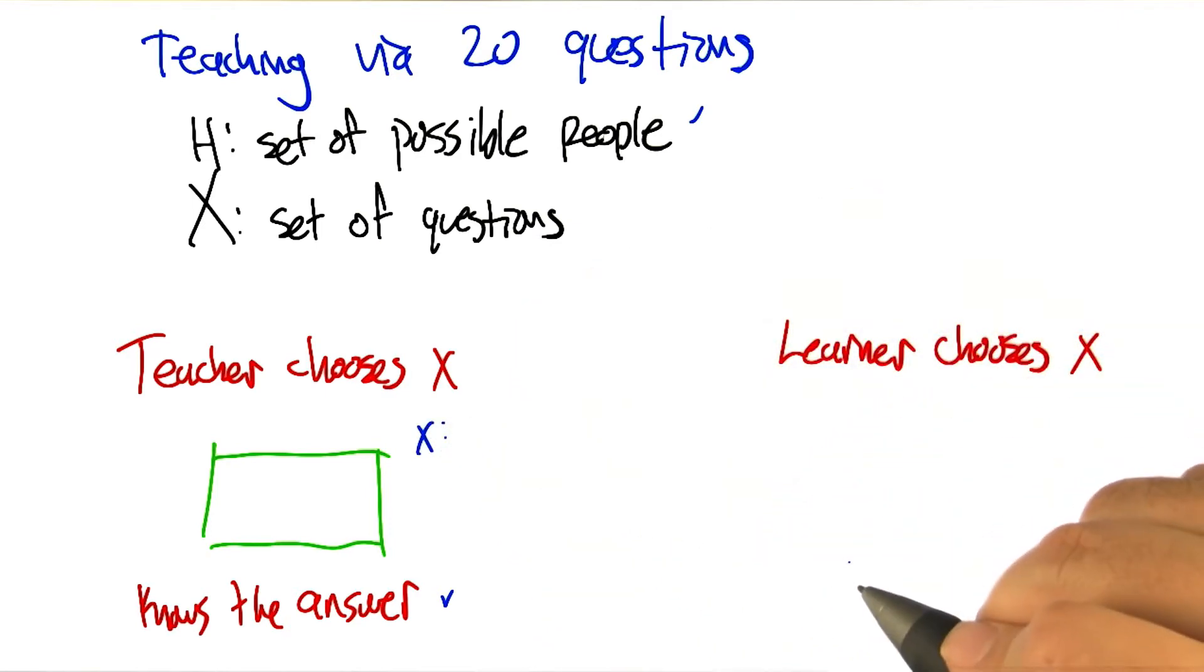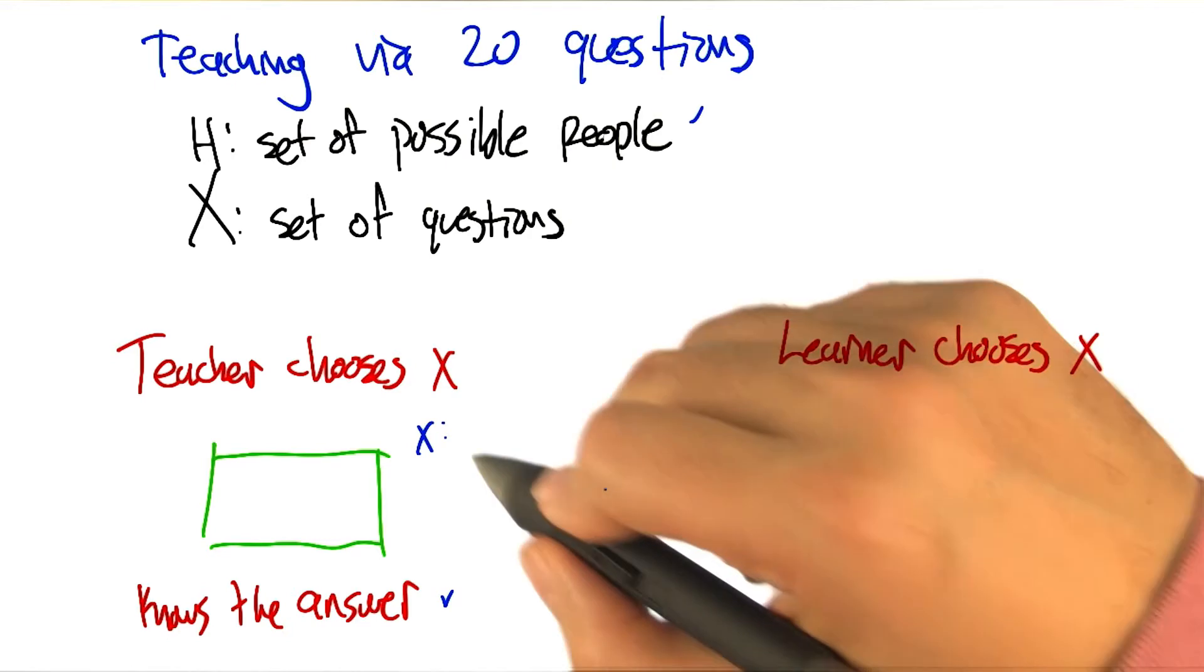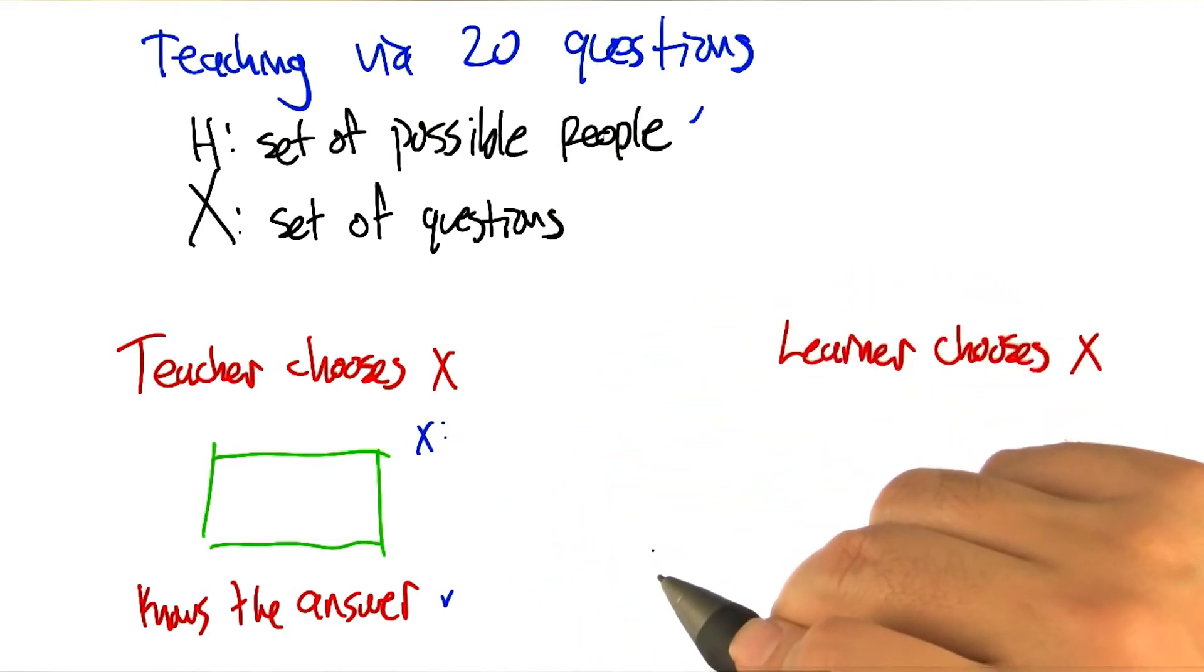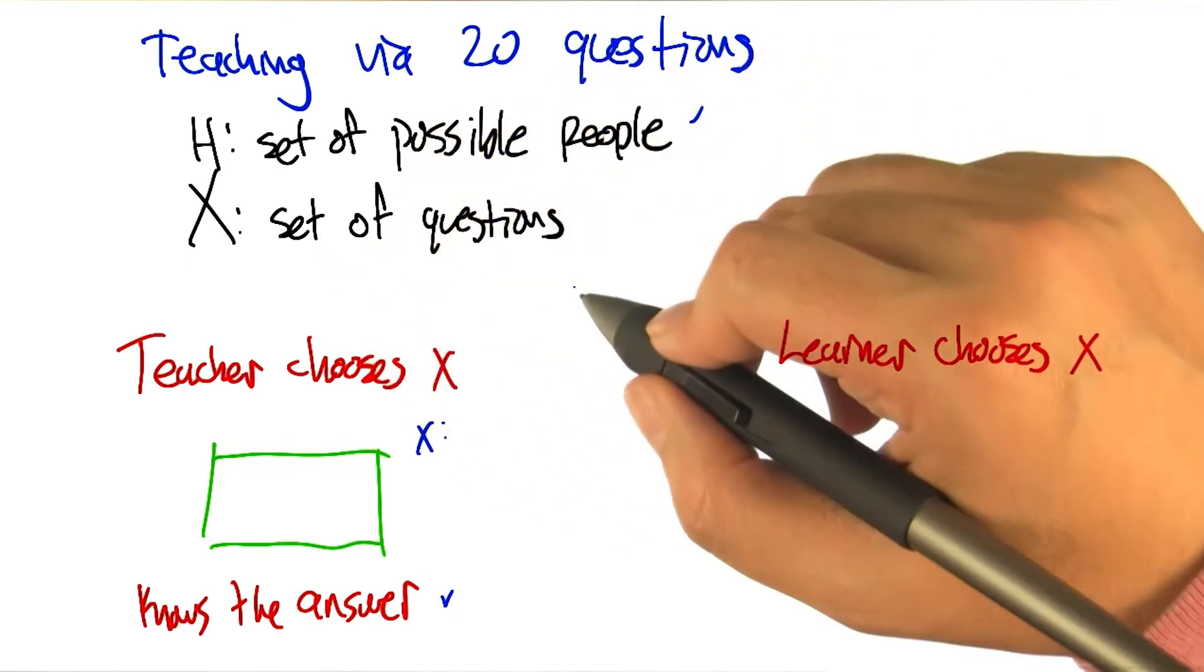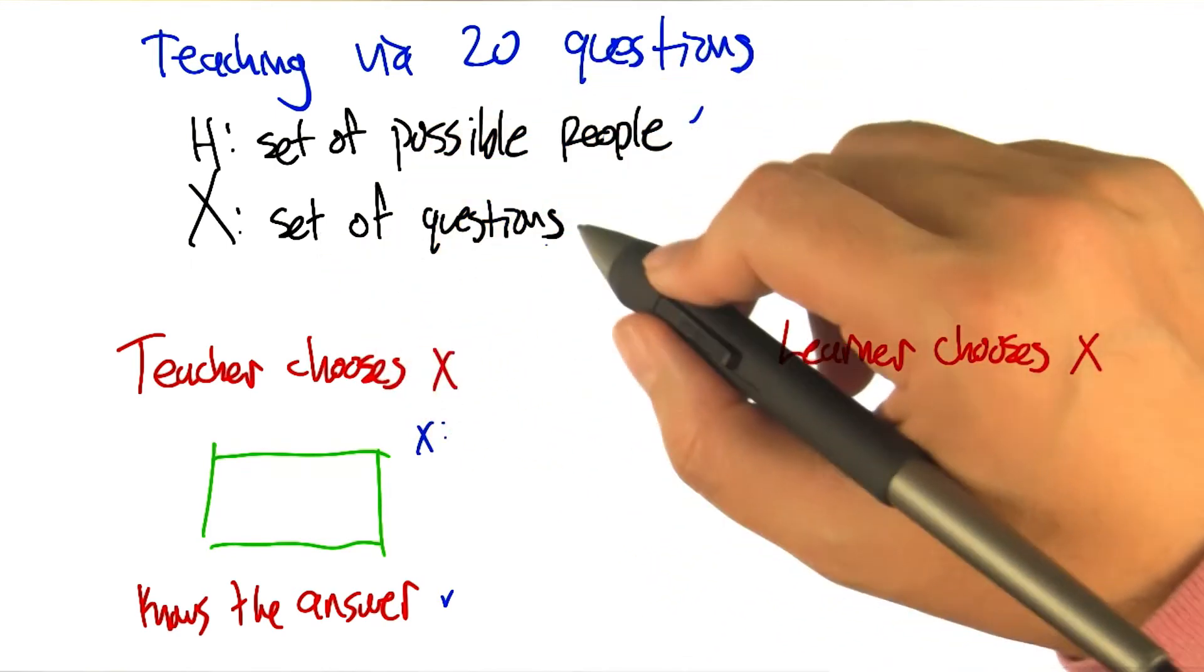But what do I mean by that? I mean, it gives the most information. Well, but there's a very strong kind of information that you could get in this particular case. So, let's imagine the set of questions is, you can ask any question in the universe.